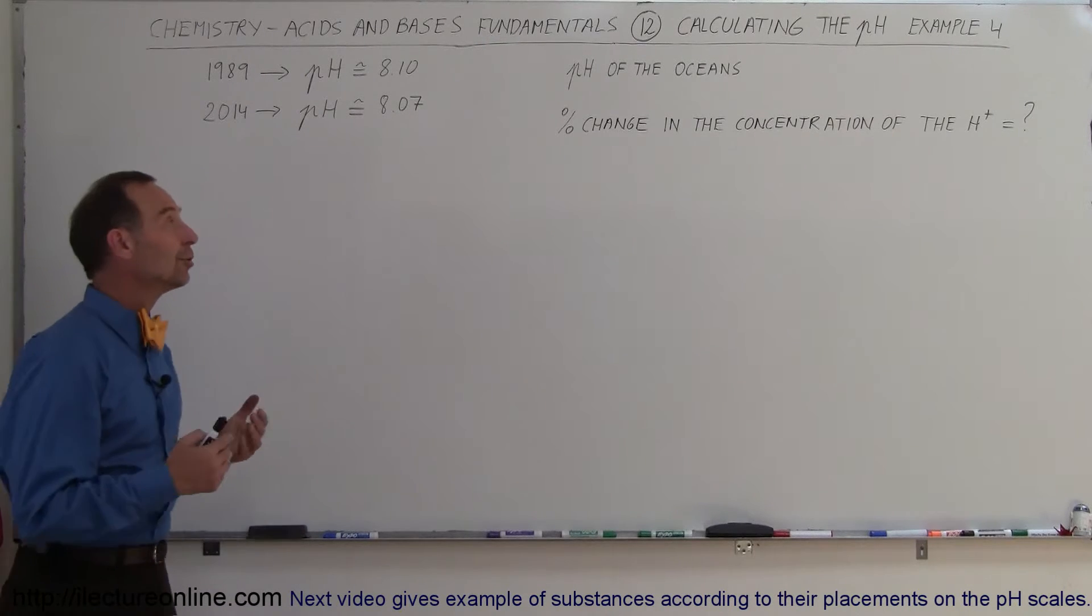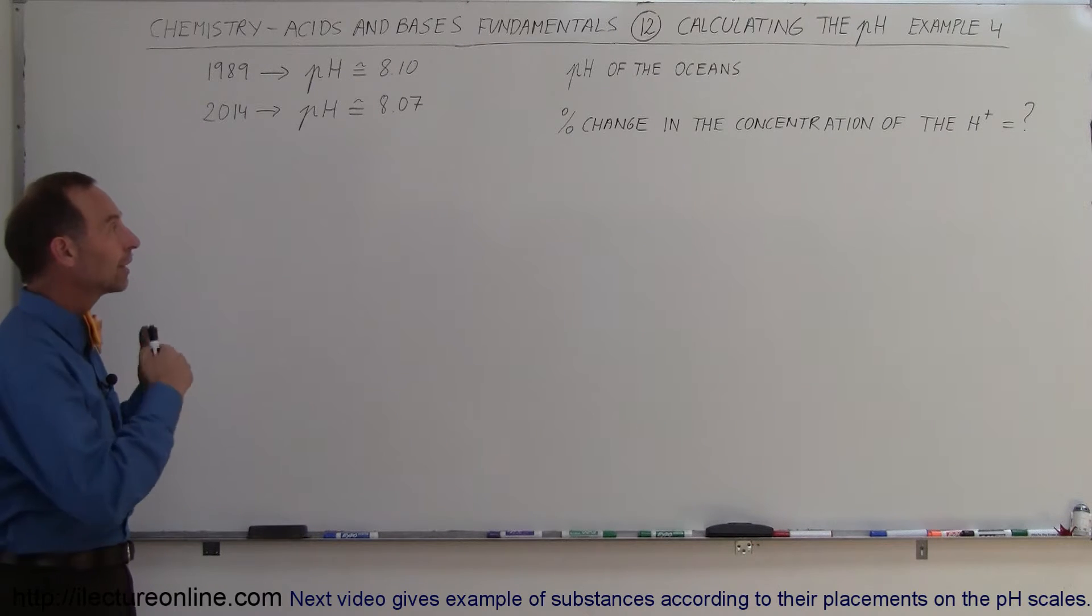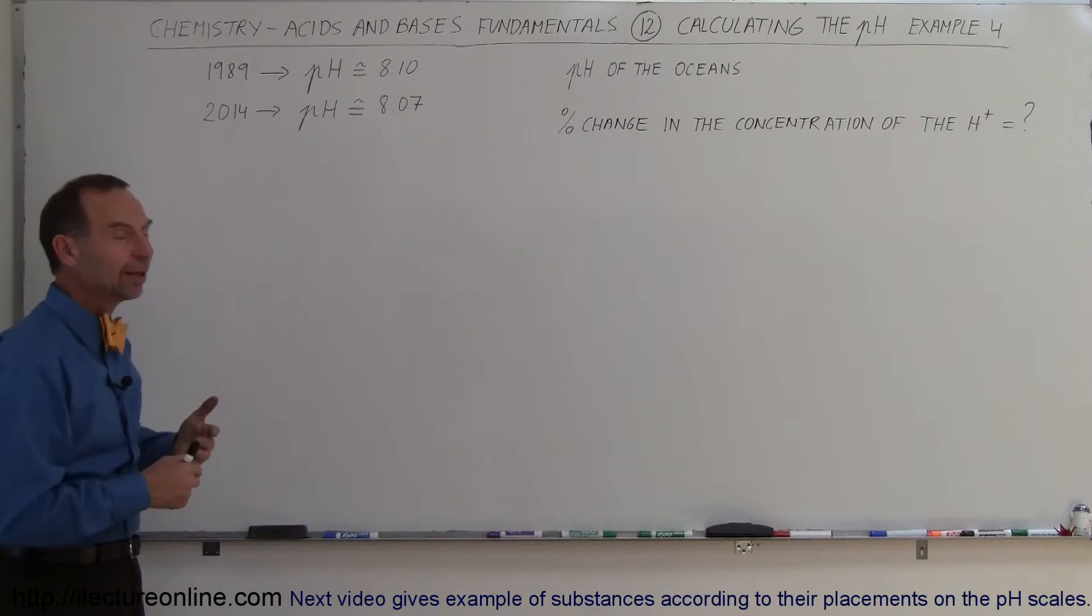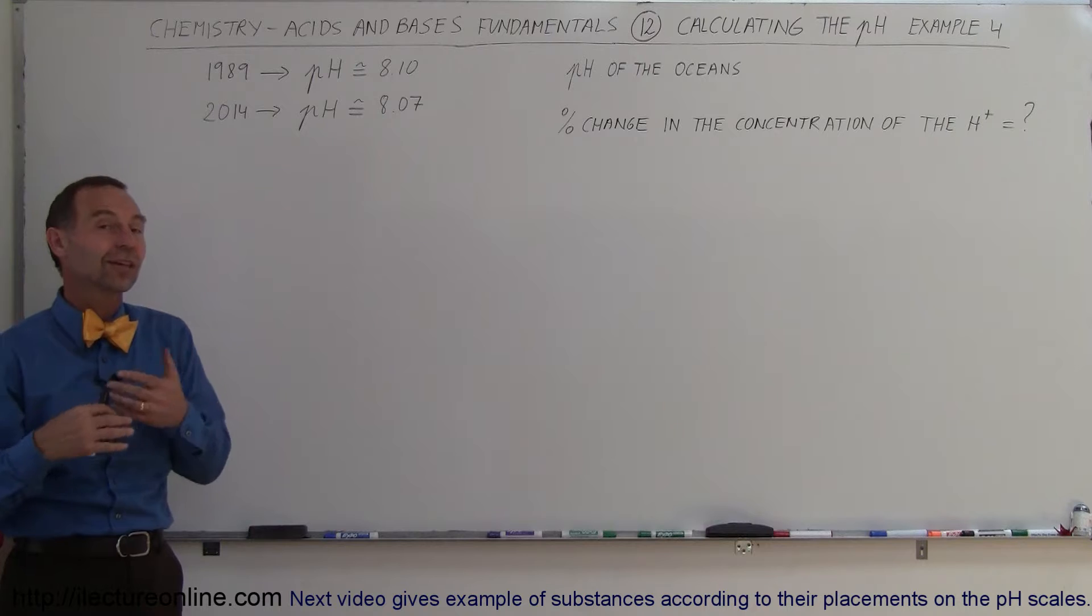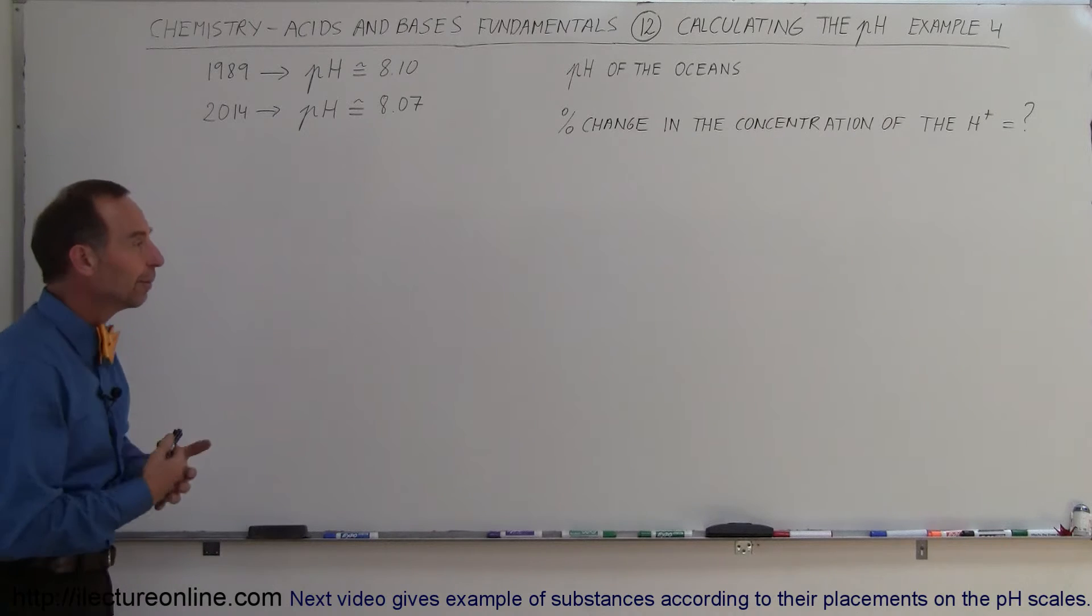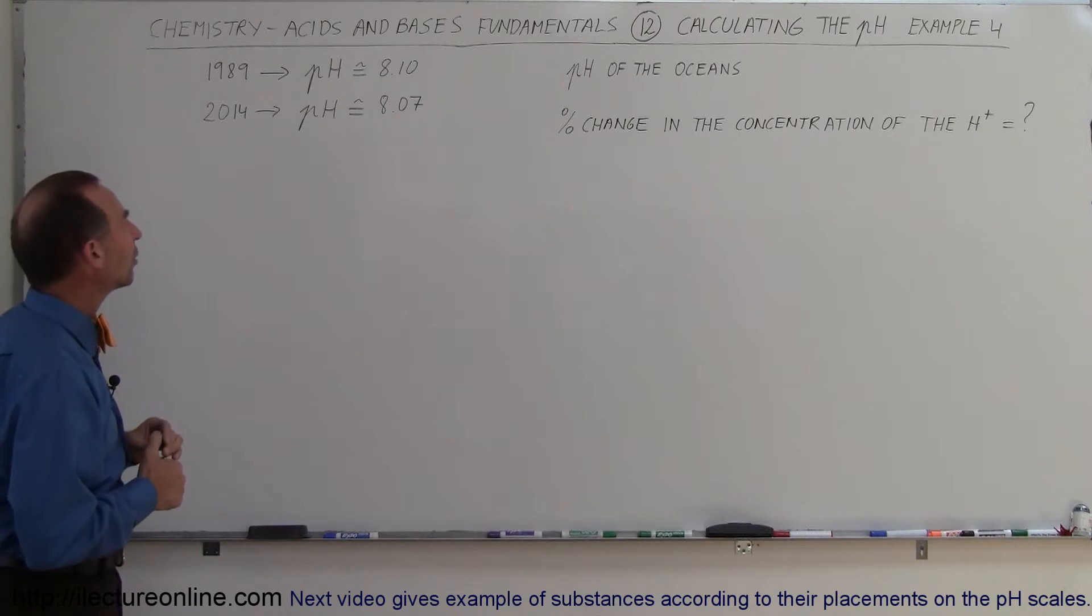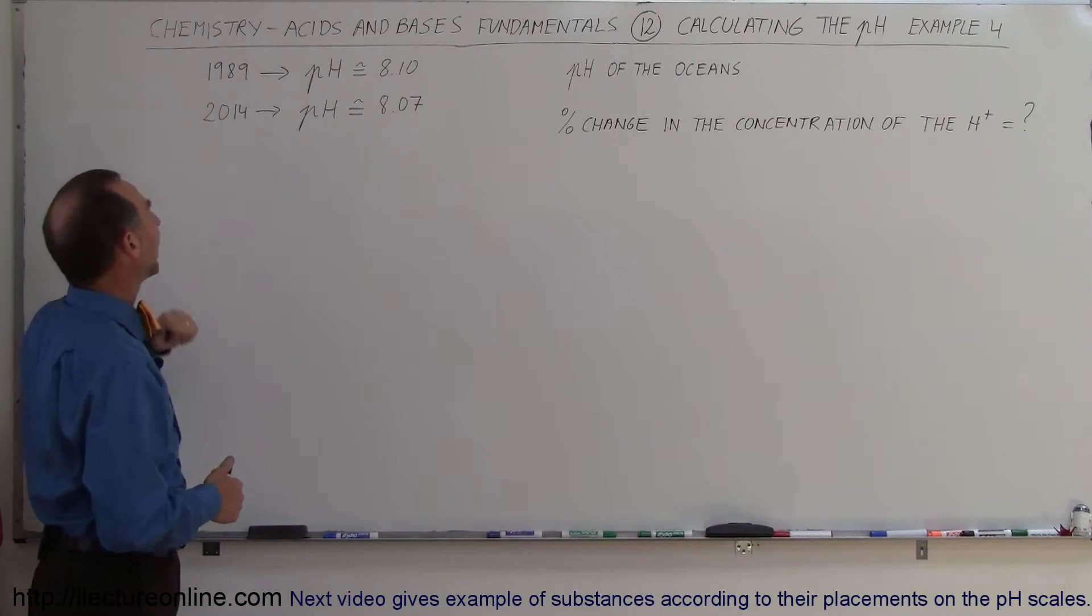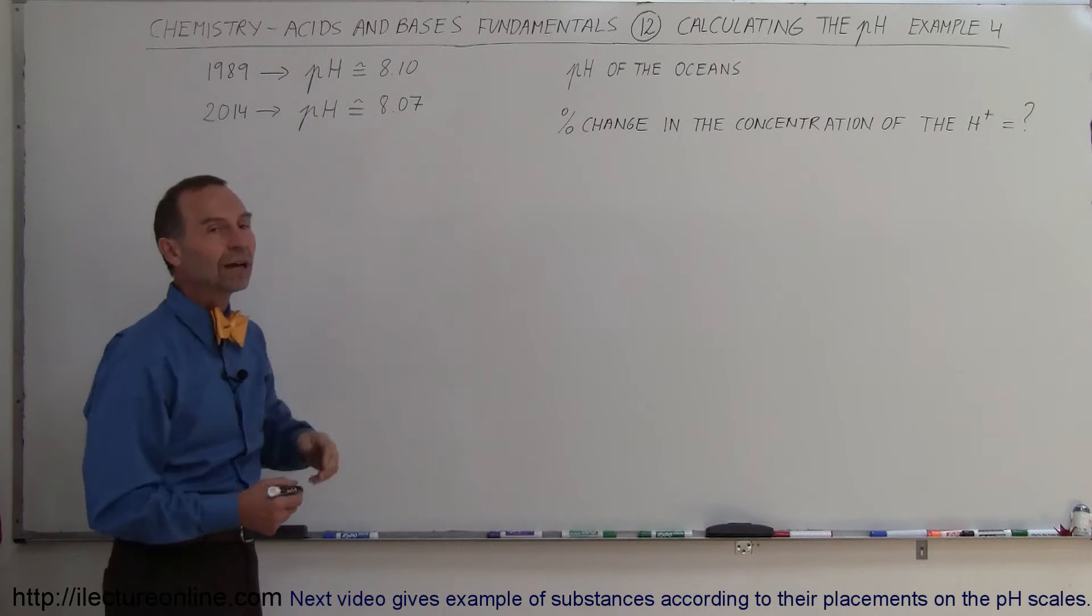Hey, welcome to ElectronLine. Now let's see if we can use our newfound knowledge to calculate the pH, or rather to calculate the change in the concentration of the hydrogen ions in the oceans since 1989. Since 1989 we've been taking very good measurements of the acidity of the oceans. Actually, I shouldn't say acidity because the oceans are very basic when you have a pH of 8.1 or 8.07. The oceans are a basic solution, but they're becoming less basic and more acidic. So we want to know what the percent change in the hydrogen concentration was between 1989 and 2014, about a 25 year span. Let's find the concentration of the hydrogen ions for these two values of the pH.